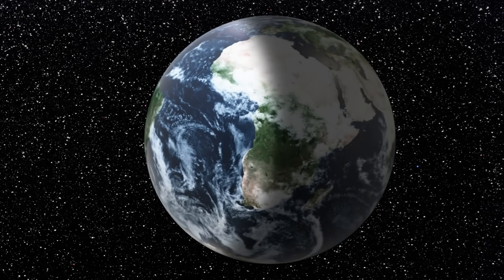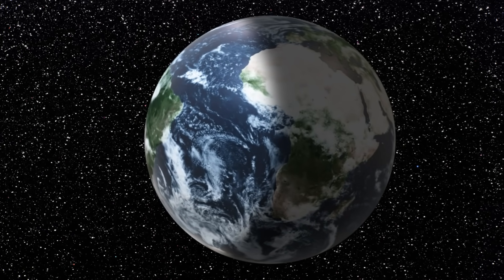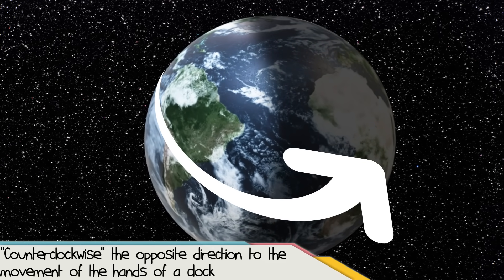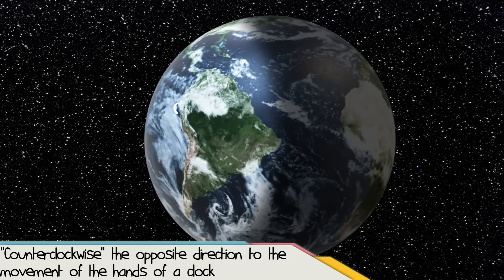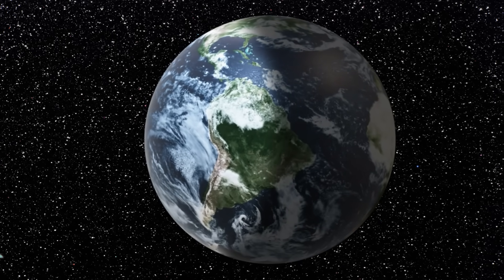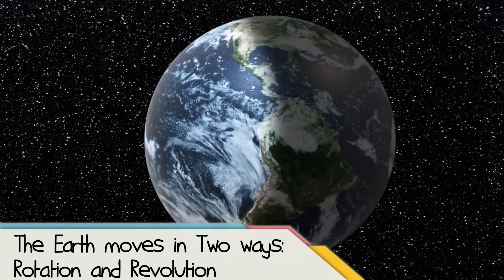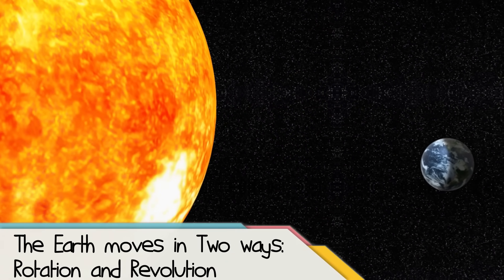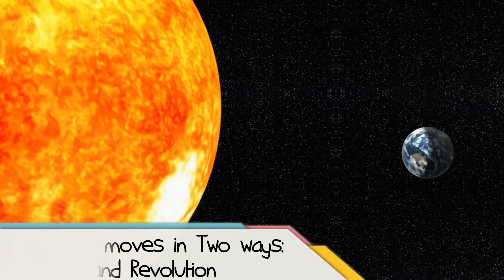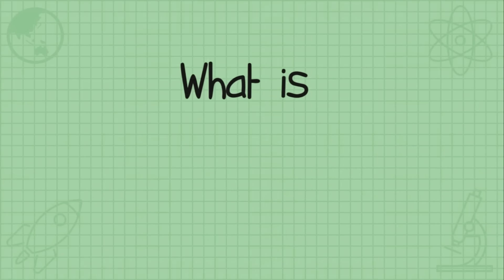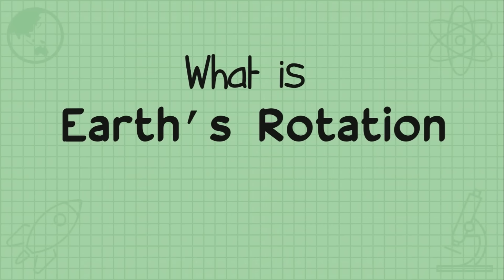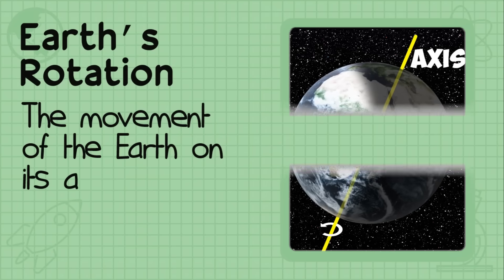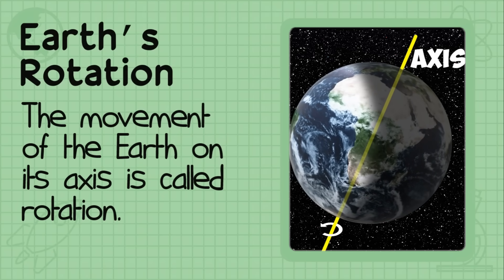This is the Earth. The Earth moves at a constant speed and follows a counterclockwise direction. The Earth moves in two ways, and we call them rotation and revolution. Rotation — the movement of the Earth on its axis is called rotation.